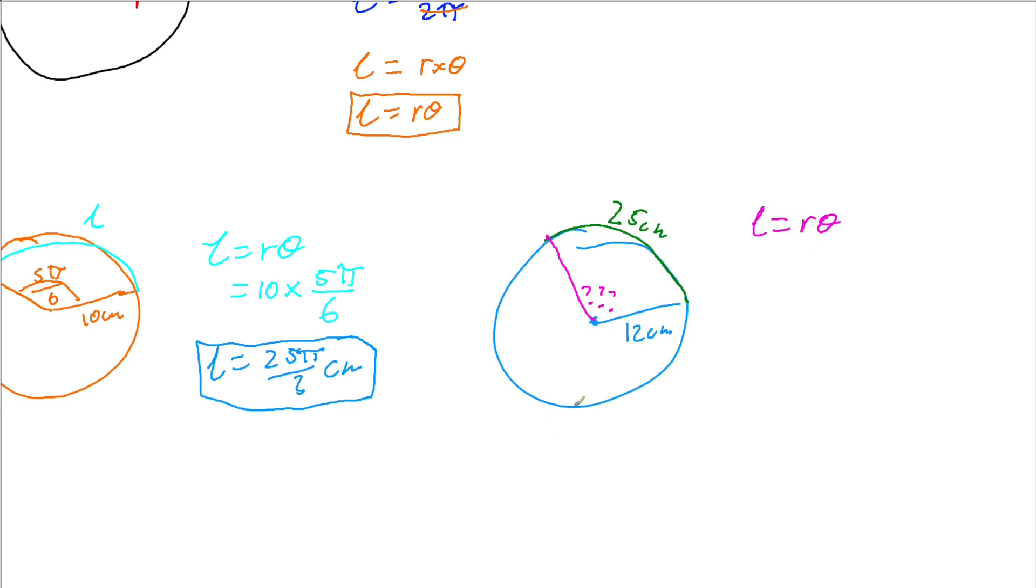I'm just multiplying by my unknown angle, so if I divide both sides by 12, I get my angle to be 25 over 12 radians, or as a decimal 2.0833 to four decimal places.